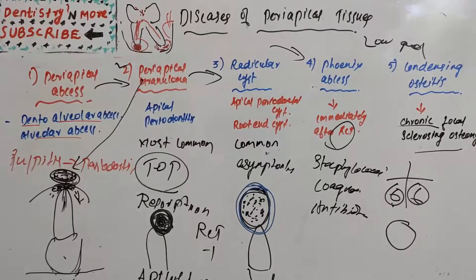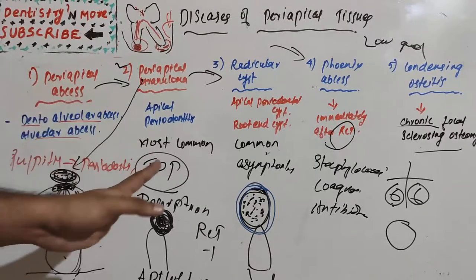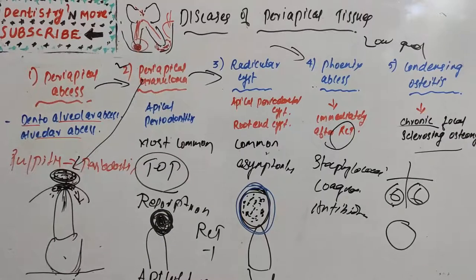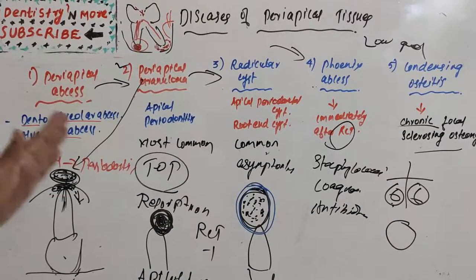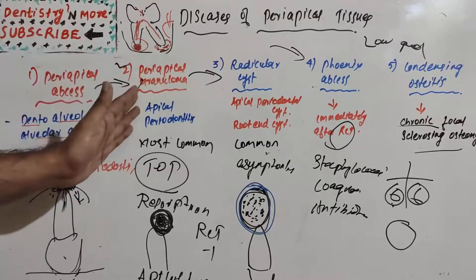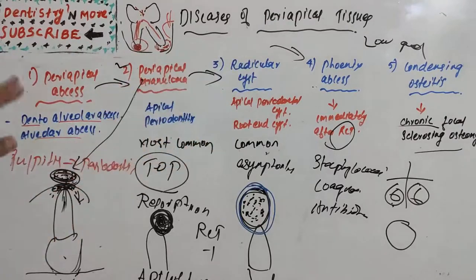These five diseases are very commonly asked questions in endodontics, oral surgery, oral pathology, oral medicine and radiology. The treatment is almost the same for everything: RCT, re-RCT, apicoectomy, or extraction. Periapical granuloma onwards is chronic in nature, while periapical abscess is acute. I hope you understood the concept of diseases of periapical tissues. Thank you.